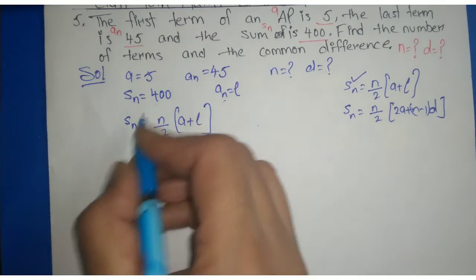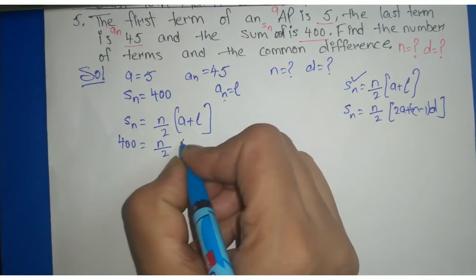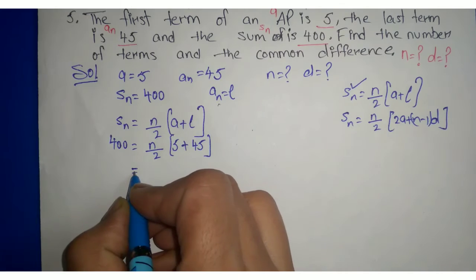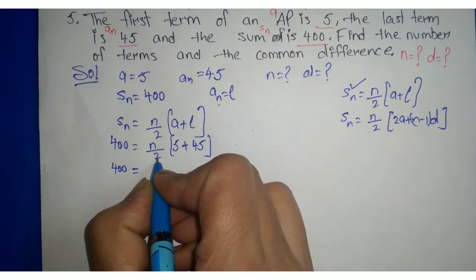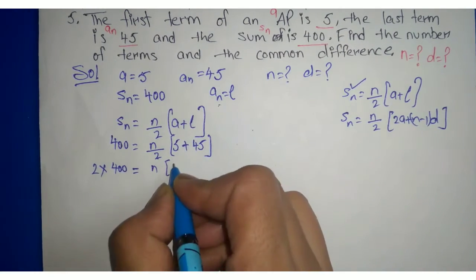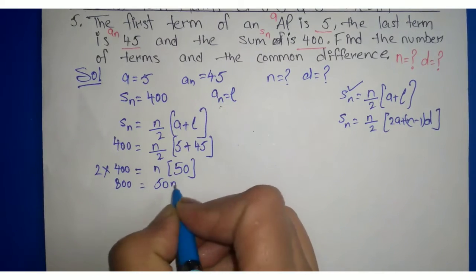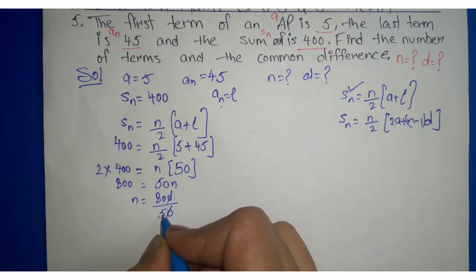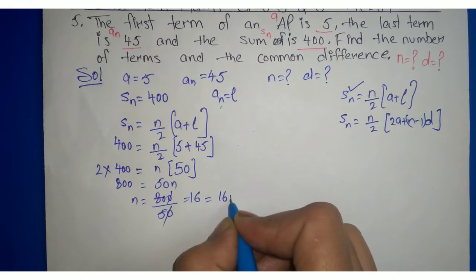अब हम values put कर देंगे: SN के place पर 400, N upon 2, A यहाँ पर 5, L means last term given है 45। Solve करते हैं: 400 multiply by 2 equal to N into (5 plus 45) equal to 50N। So 800 equal to 50N, N की value आएगी 800 upon 50, which equals 16। N equal to 16।